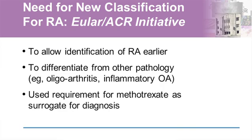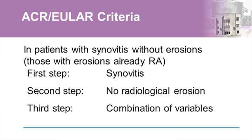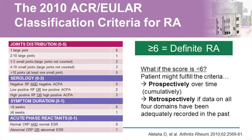It was to address questions like that that the ACR-EULAR initiative was started — essentially to allow earlier identification of rheumatoid arthritis and particularly to differentiate from other pathologies at a time when it wasn't completely obvious what these patients had. Controversially, we took in this classification criteria the requirement for methotrexate as the ultimate gold standard: if a patient required methotrexate, that was equivalent to a diagnosis of rheumatoid.